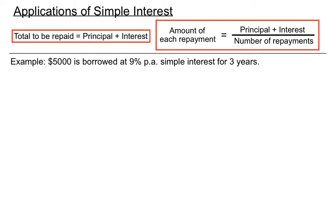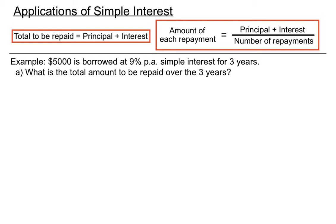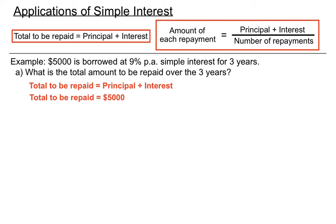$5,000 is borrowed at 9% per annum simple interest for three years. The first part of the question asks: what is the total amount to be repaid over those three years? Using that first rule — total to be repaid equals the principal plus the interest. The principal is straightforward: we borrowed $5,000. Now let's work out the interest separately before adding it to the $5,000.